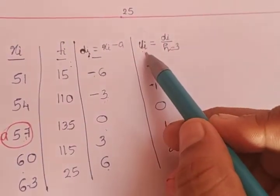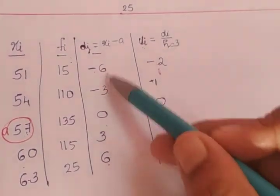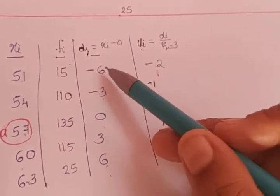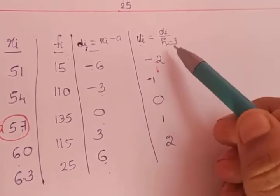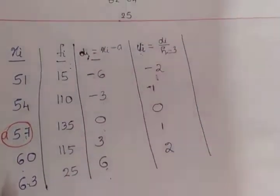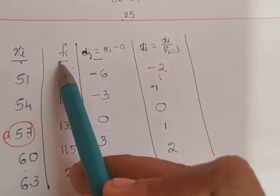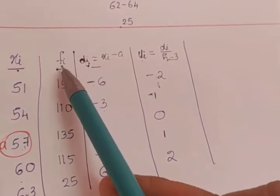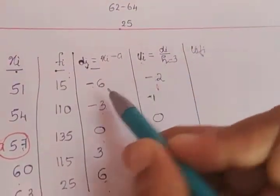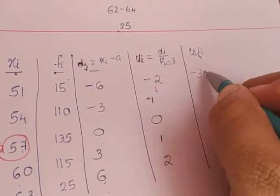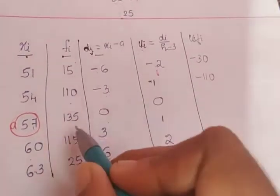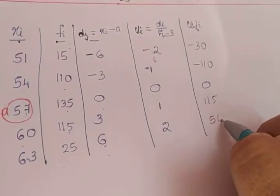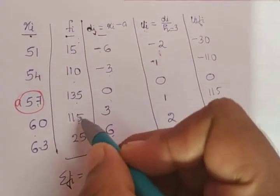ui = di/h, where h = 3 is the common factor among the di values (−6, −3, 0, 3, 6). For step deviation, we calculate fi × ui instead of fi × di. The fi × ui values are: 15 × (−2) = −30, 110 × (−1) = −110, 135 × 0 = 0, 115 × 1 = 115, and 25 × 2 = 50.